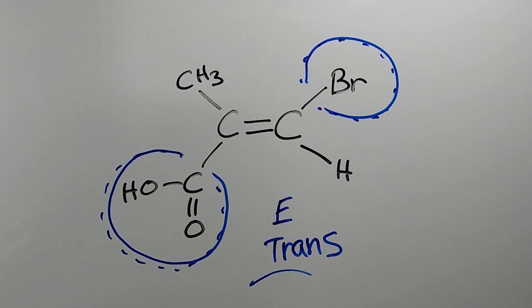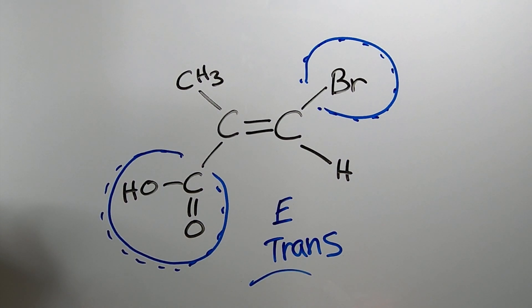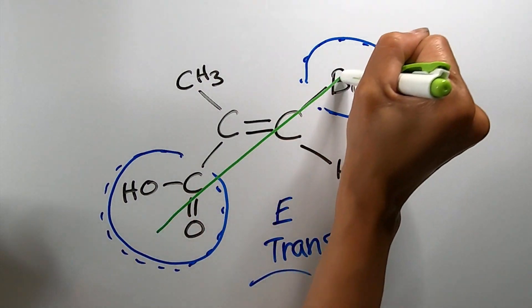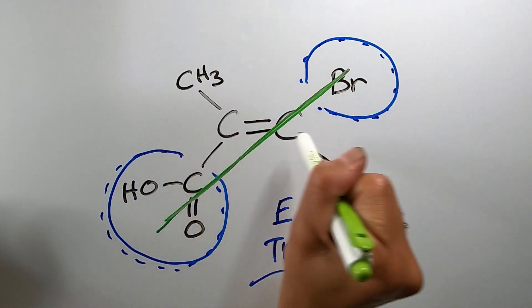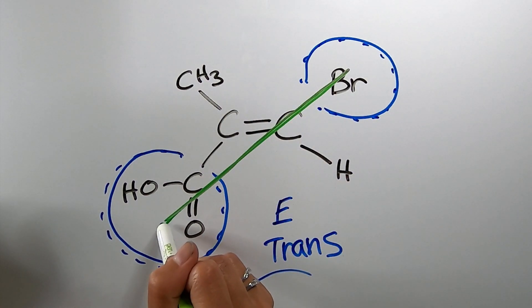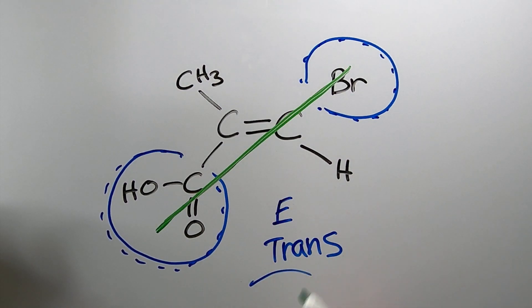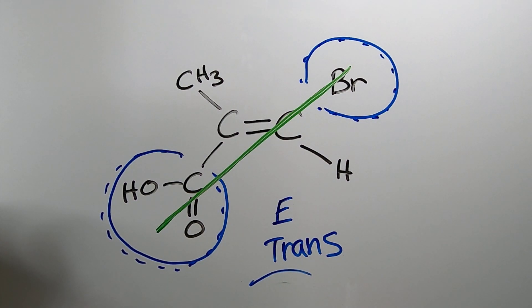One last thing: E or trans geometric isomers are more energetically favored, meaning they are more stable. Because the two priority groups, which have large electron clouds, are as far away from each other as possible — being on opposite sides of the double bond plane — they are less repulsive of each other, which means there is less energy in the molecule and therefore more stability. So E and trans are more favored, more stable molecules.